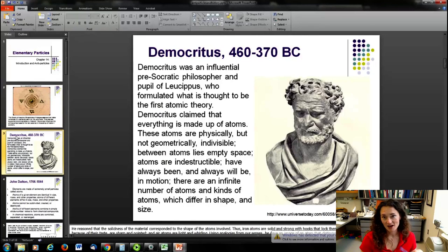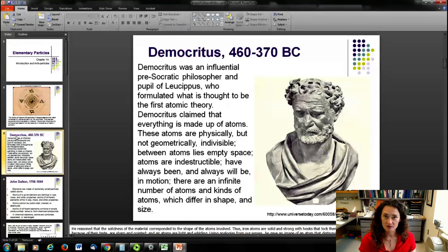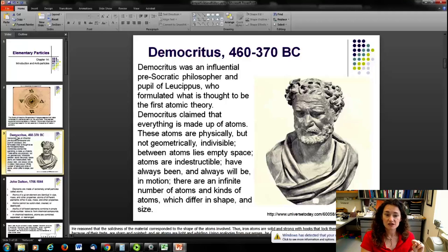Now, Democritus, he lived around 460 to 370 years before the Common Era. They're not really exactly sure. So these dates listed here are approximate dates for his life. But he was an influential pre-Socratic philosopher. And he was a pupil of Leucippus, who formulated what is thought to be the first atomic theory. Democritus actually claimed that everything is made of atoms. And these atoms are physically but not geometrically indivisible. And between atoms lies empty space. And that atoms are indestructible. And they have always been and always will be in motion. And there's an infinite number of atoms and kinds of atoms which differ in shape and size.